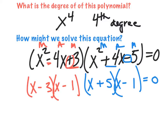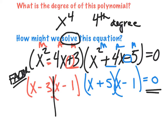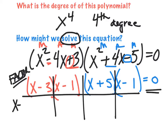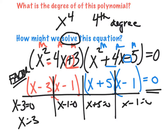Now, some of us get a little ahead of ourselves. If the question just said factor, you would be done here. But it didn't — it wants us to solve, and that's why it's set equal to zero. So now we actually want to solve. We'll set each piece equal to zero and solve. I get x = 3, x = 1, x = -5, and x = 1.